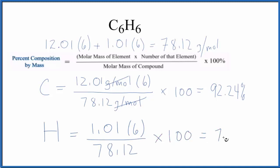These numbers should add up to a hundred or very close to a hundred. So that's how you find the percent composition by mass for each element in C6H6, benzene.